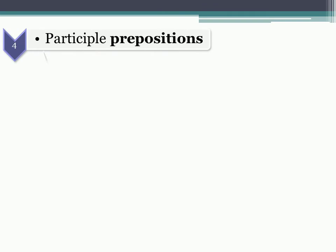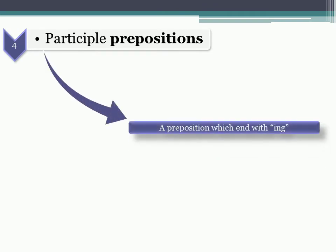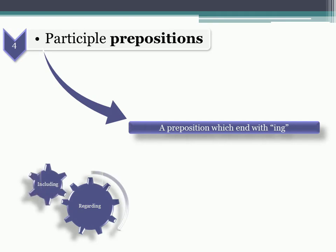Participle prepositions. A participle preposition is a preposition which ends with ing. For example, regarding, including, excluding.